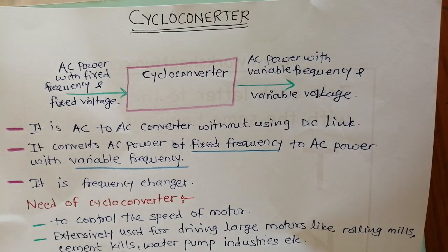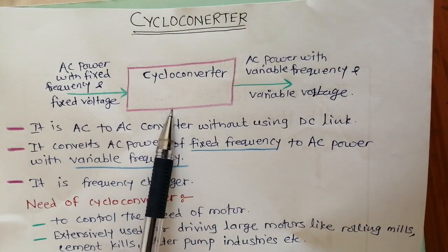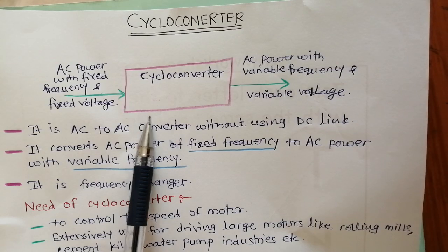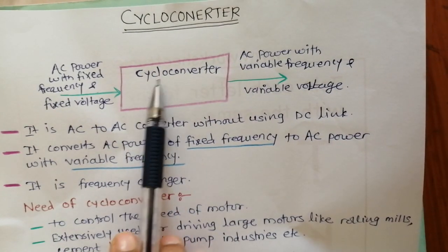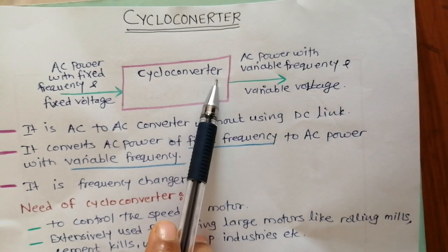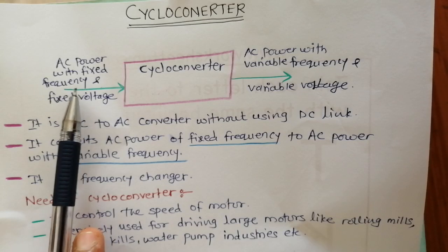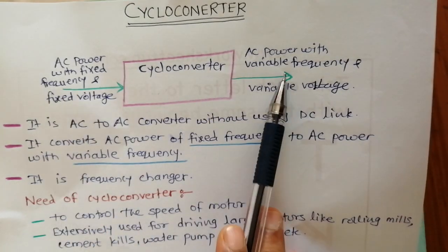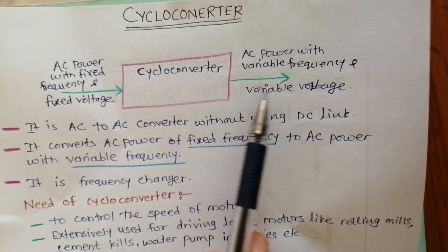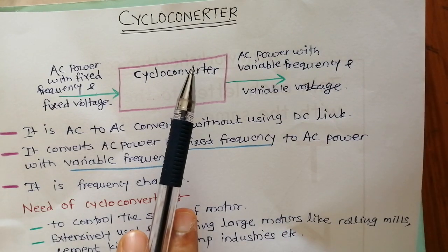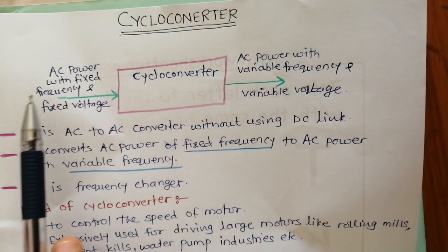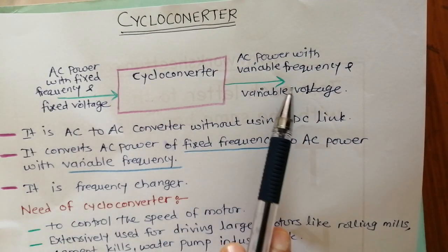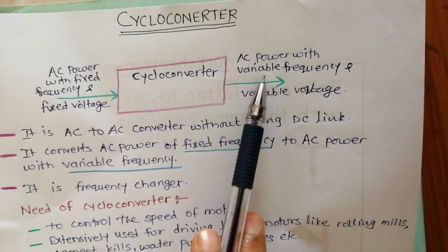Today we will discuss cycloconverters, a part of power electronics. This block diagram shows the cycloconverter with its input and output parts. A cycloconverter converts a fixed AC signal with fixed frequency and fixed voltage into an AC signal with variable frequency and variable voltage. That's why the cycloconverter is known as a frequency changer.